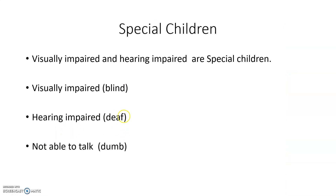First of all, visually impaired, that means blind. Blind means for them everything is dark. At night time, if there is no light and you open your eyes, it is full of dark. Then immediately we switch on the lights, or light a candle, or use the mobile, then we get some light. But for these blind people, 24 hours always, it is full of dark only. Children, is it miserable or not? Very miserable, no?